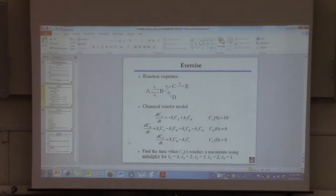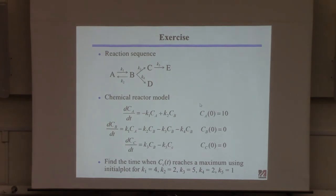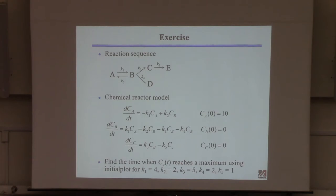Here's the exercise. I'm going to have you solve this problem using the same idea. Here's a little reaction network. A reacts to B, and this reaction is reversible — B goes back to A — with rate constants K1 and K2. Then B further reacts in two parallel reactions to give C or D, and C further reacts to give E, each with a different rate constant.